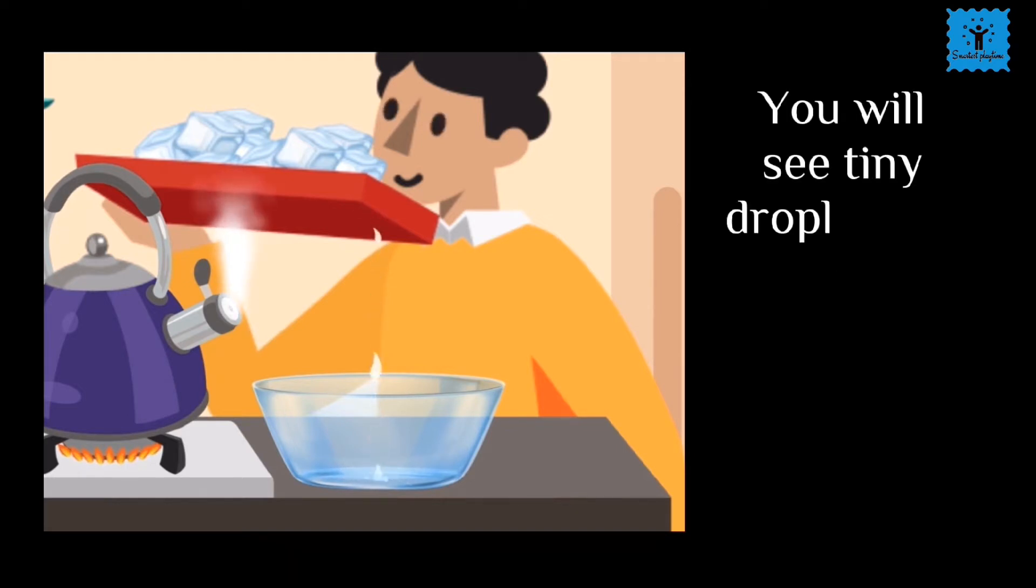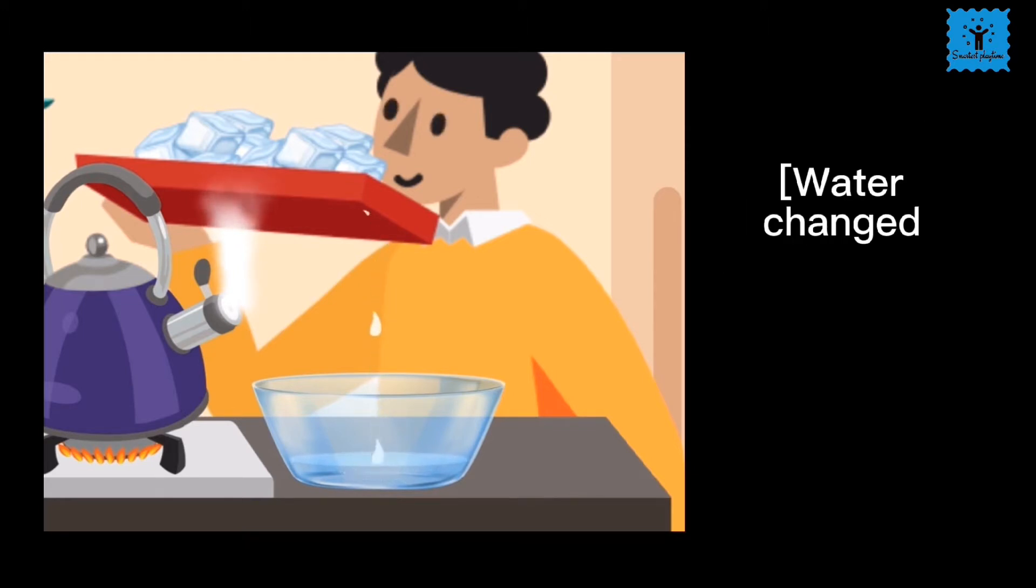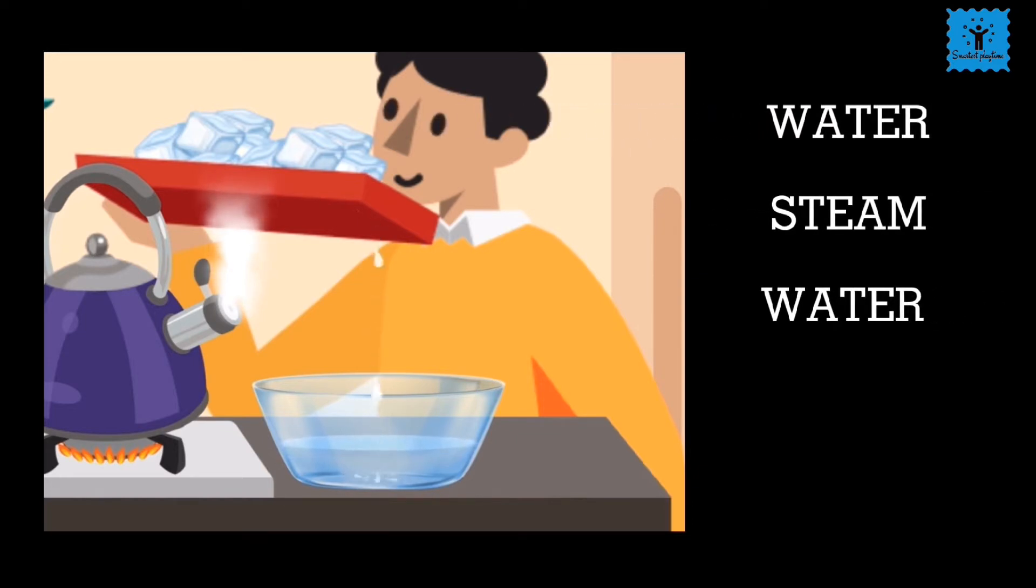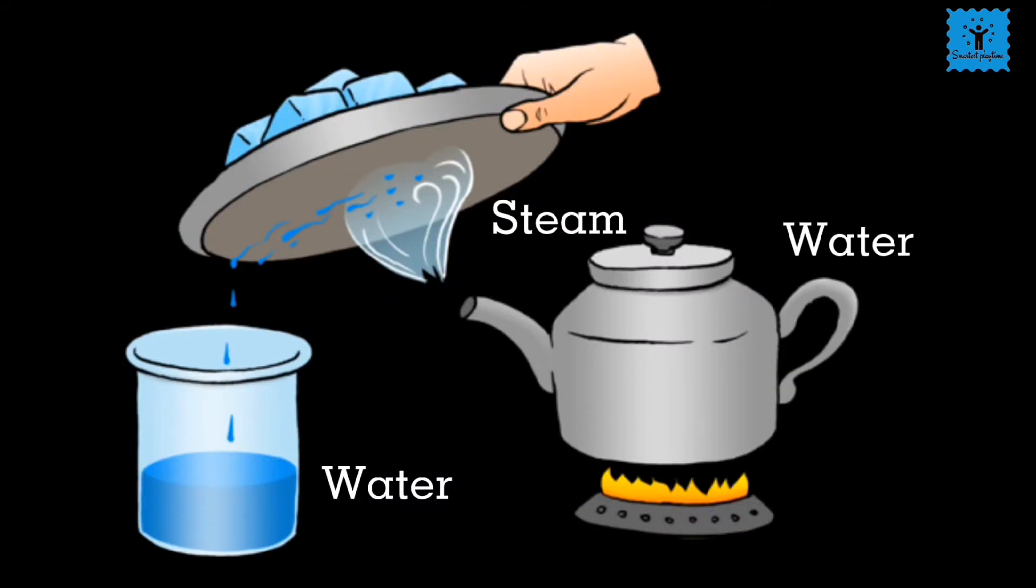In this case, when we boil the water, water converts into steam by the process called evaporation. And when this steam cools down, it converts back into water droplets. This is an example of physical change in which no new substance is formed and this is totally reversible. In this, water converts into steam and steam converts back into water droplets.